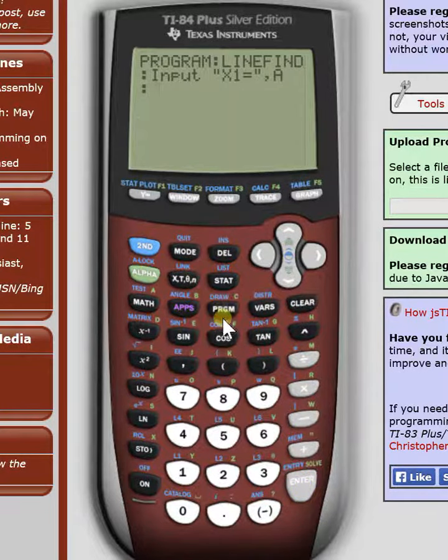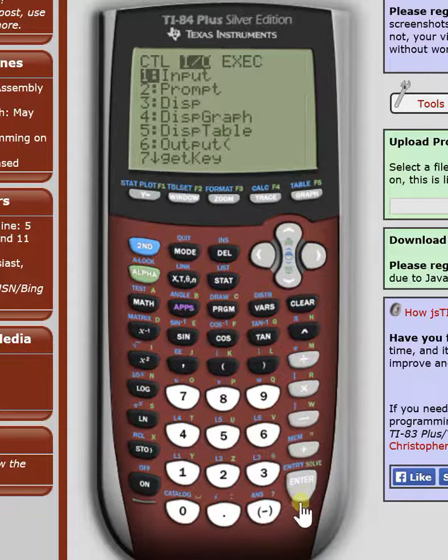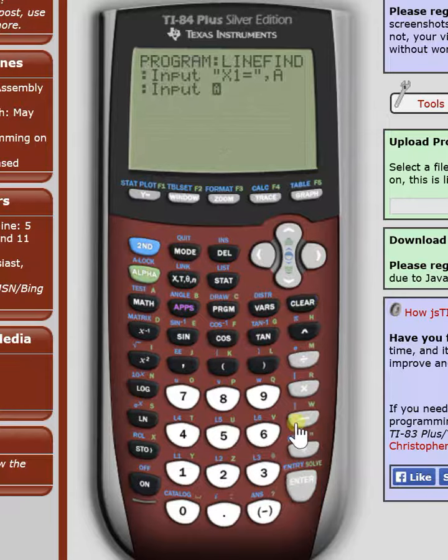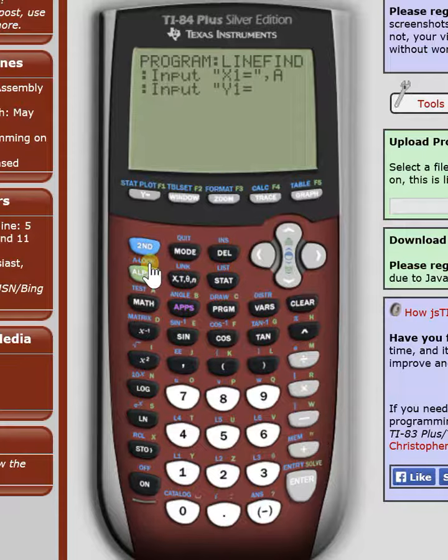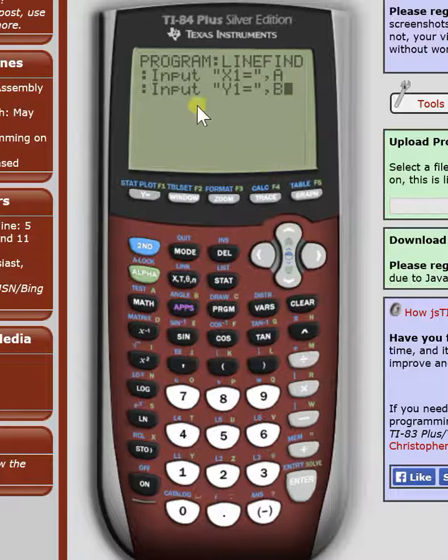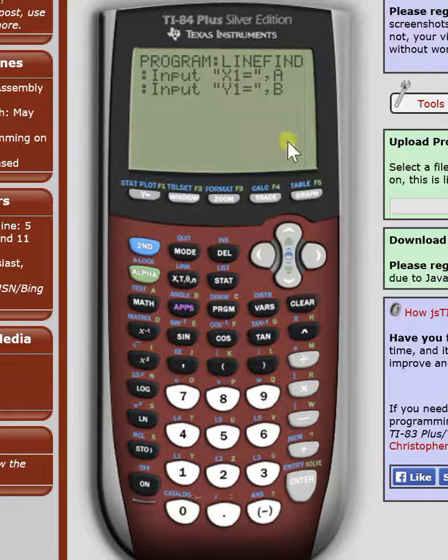Now we have to do this again for each of our variables. Quotations. y1 again, equals, and we'll do a different variable, we'll do b. So this is going to input for x1 and y1, so that's your coordinate pair, your first coordinate pair that they'll give you in the problem.